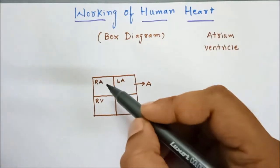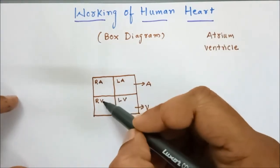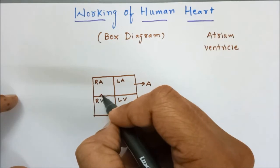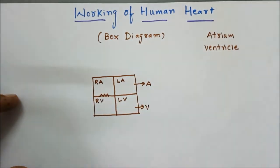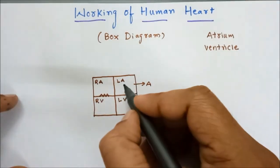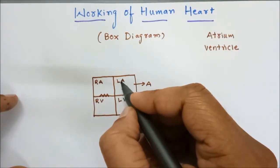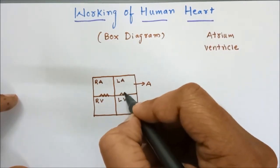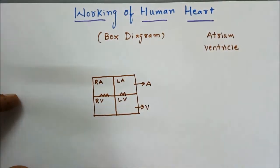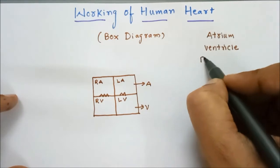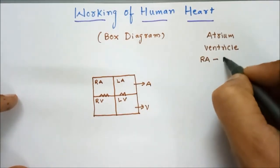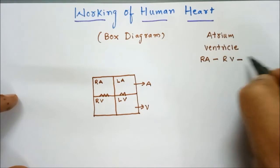Between the right atrium and right ventricle there is a tricuspid valve, and between the left atrium and left ventricle there is a bicuspid valve.